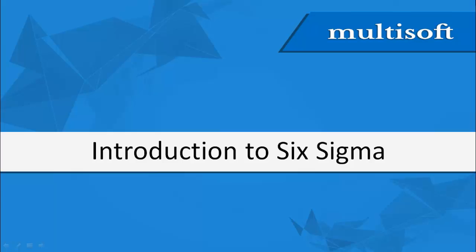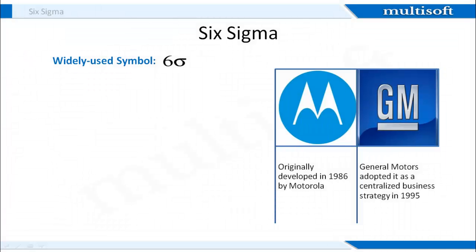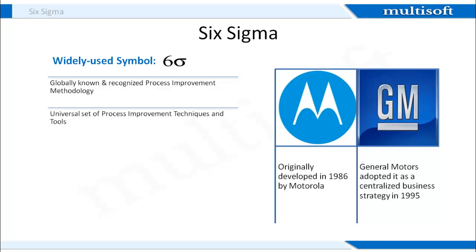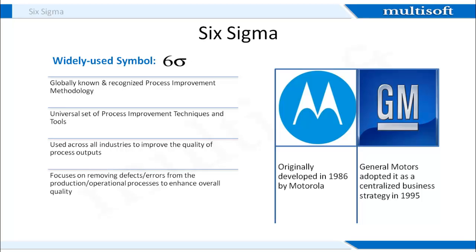Let me now provide you an introduction to Six Sigma and its significance. Six Sigma is a process improvement methodology which has been accepted universally. The techniques and tools of Six Sigma are used across all industries. The main benefit of Six Sigma is that it helps to remove defects or errors from the production and operational cycles. It helps to improve the overall quality of business functions and brings merits like reduced cost, increased revenue, etc.